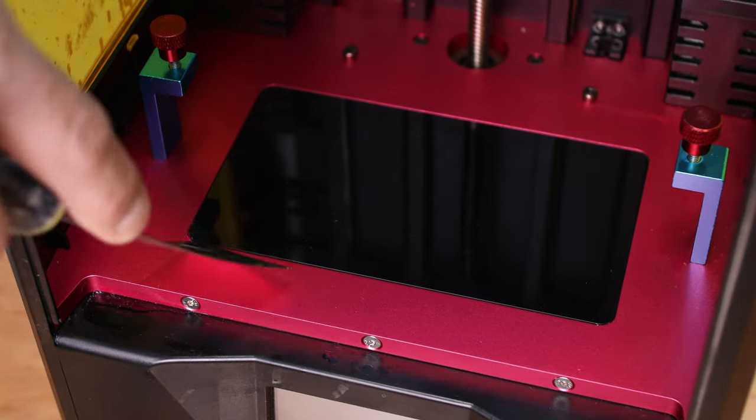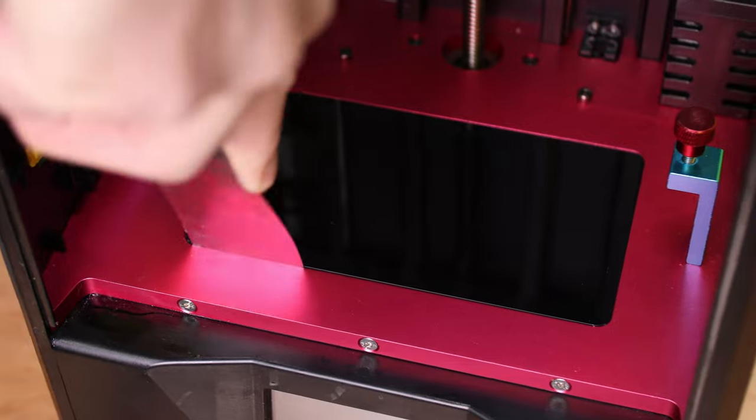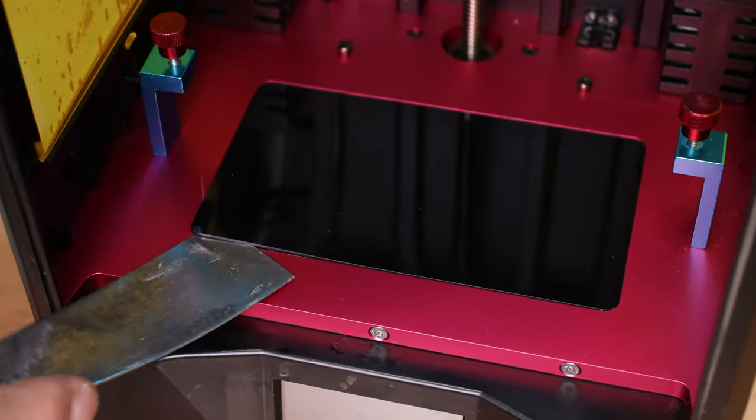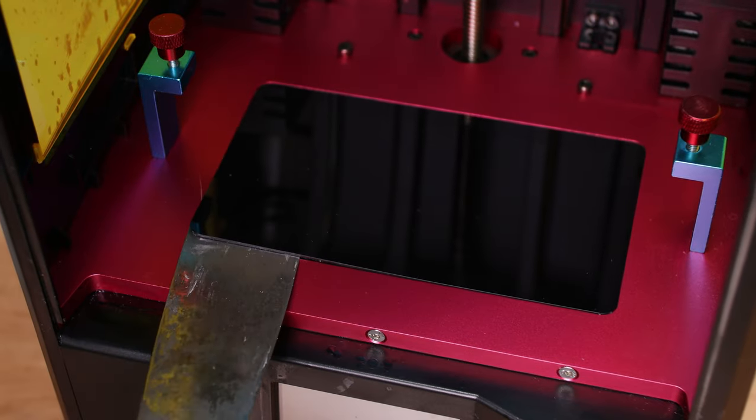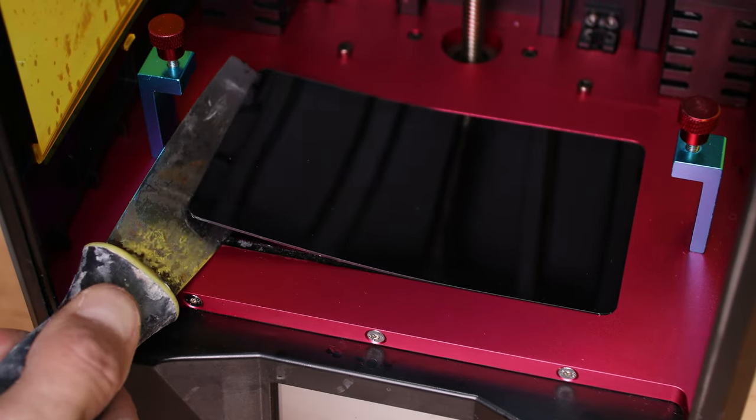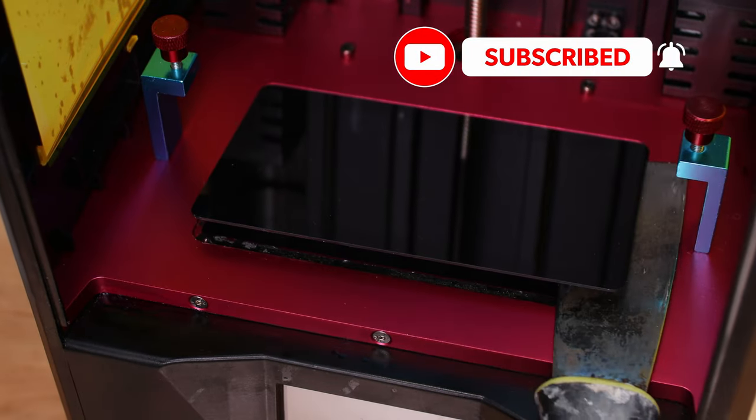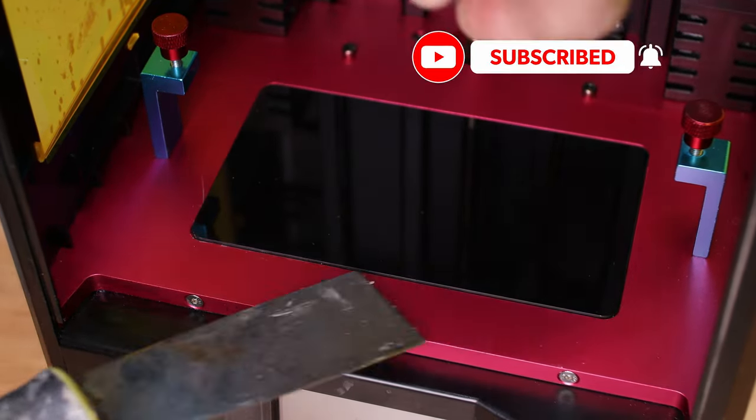To get the LCD screen off, take your putty knife and pry it under there. If you break the screen that's okay since we're replacing it, but try not to slip under super fast and hard and destroy the lenses underneath. Once you get it worked under a little bit, then you can just work it all the way around and pop it off.